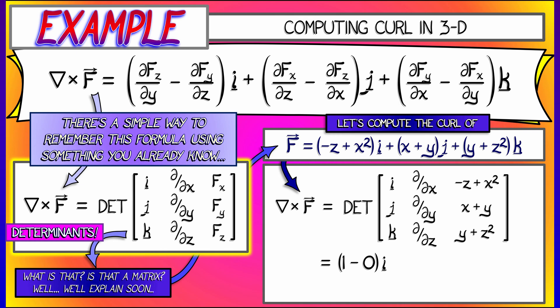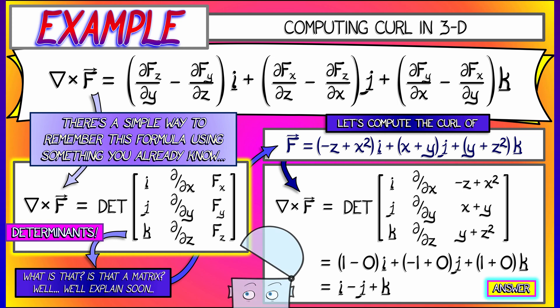Likewise, with the J and K components, I use minor expansion for this determinant or whatever method I want. And what I will get after some computation is that the J component is equal to negative one, the K component is equal to positive one. And what that means is that my final answer for the curl of this vector field is simply I minus J plus K. This is interesting because it's a constant vector field. It's not changing. That means that you're always rotating about the same axis with the same rotational strength.